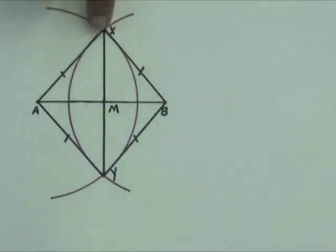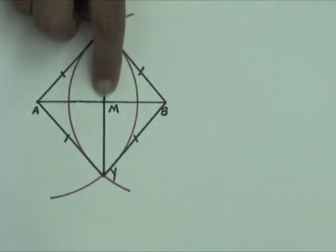AB and XY are the diagonals of the rhombus. M is their point of intersection.